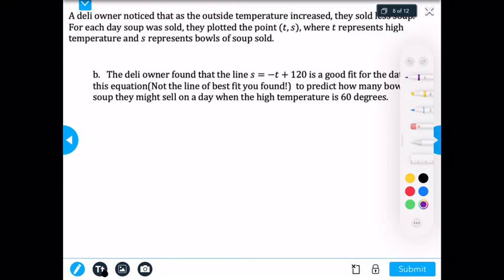My next problem says, The deli owner found that the line S = -T + 120 is a good fit for the data. Use this equation, not the line of best fit you found, to predict how many bowls of soup they might sell on a day where the high temperature is 60 degrees.